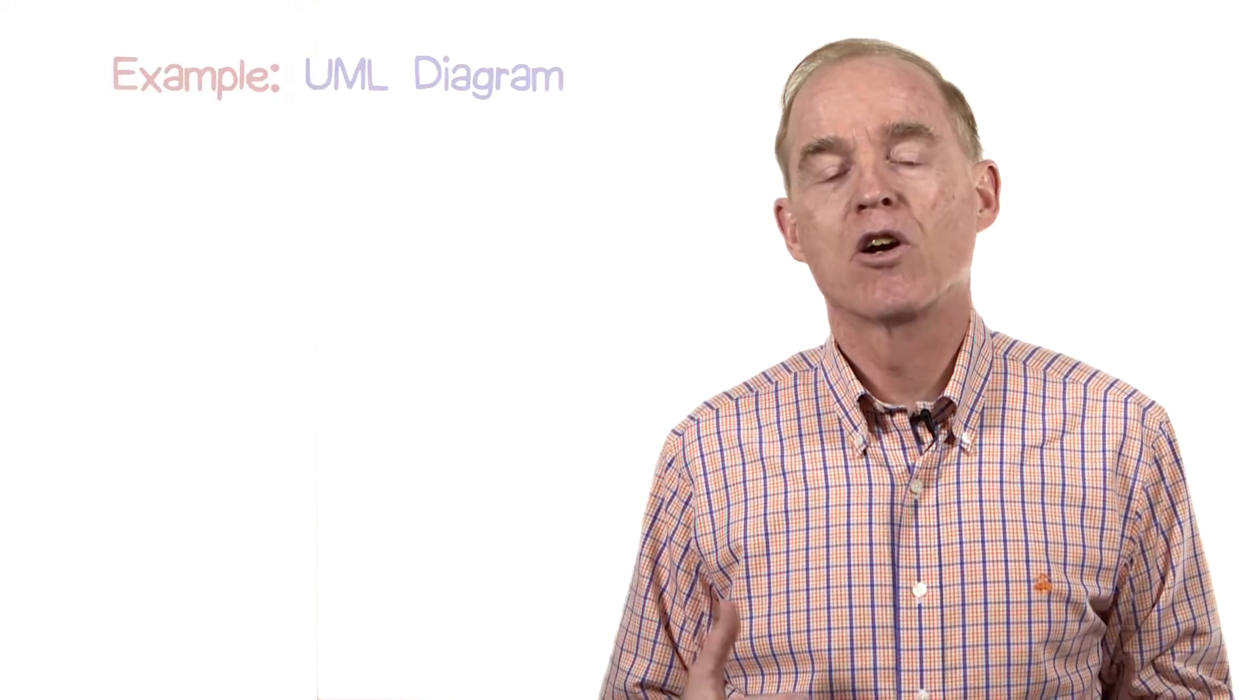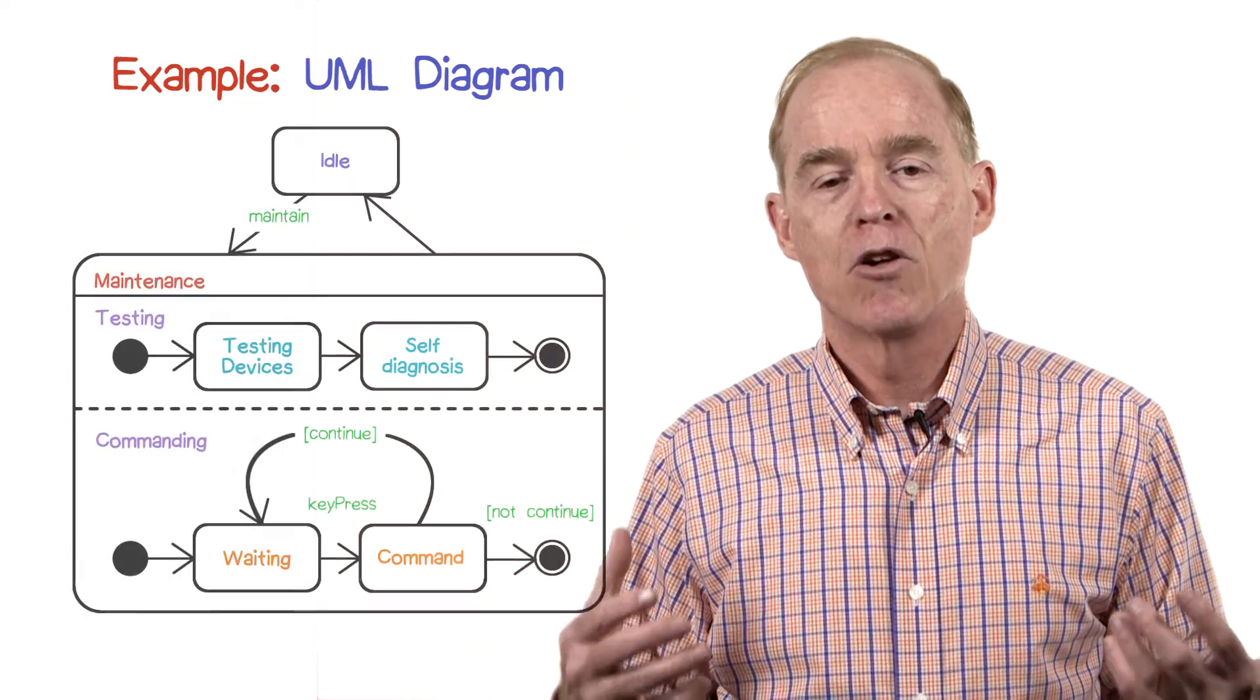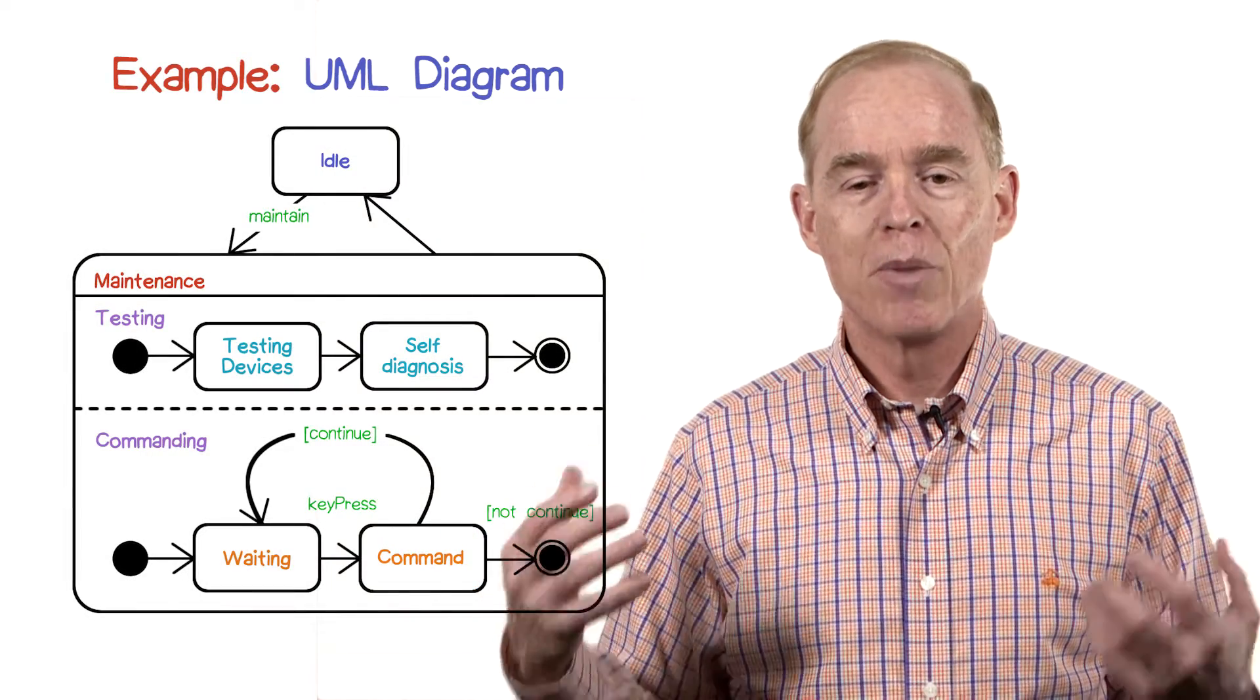There's also an example of a data condition in here as well. In UML, the concurrency looks like the following. There are two states here: an idle state and a maintenance state.